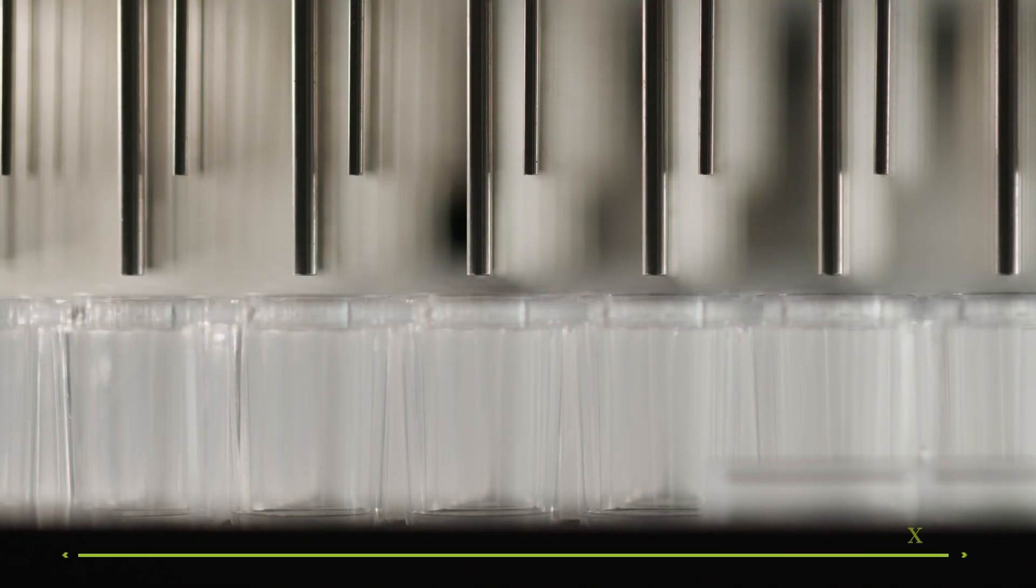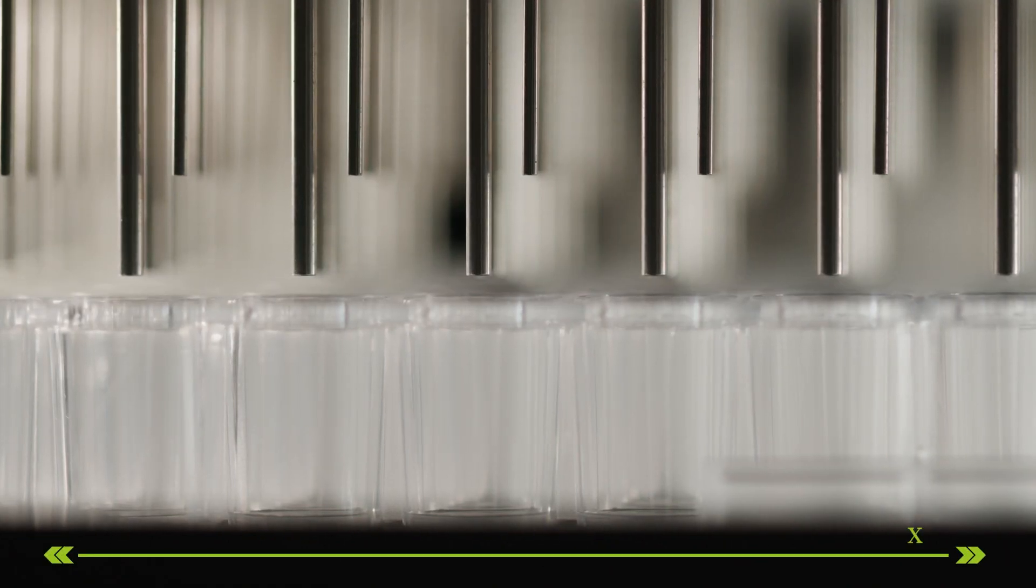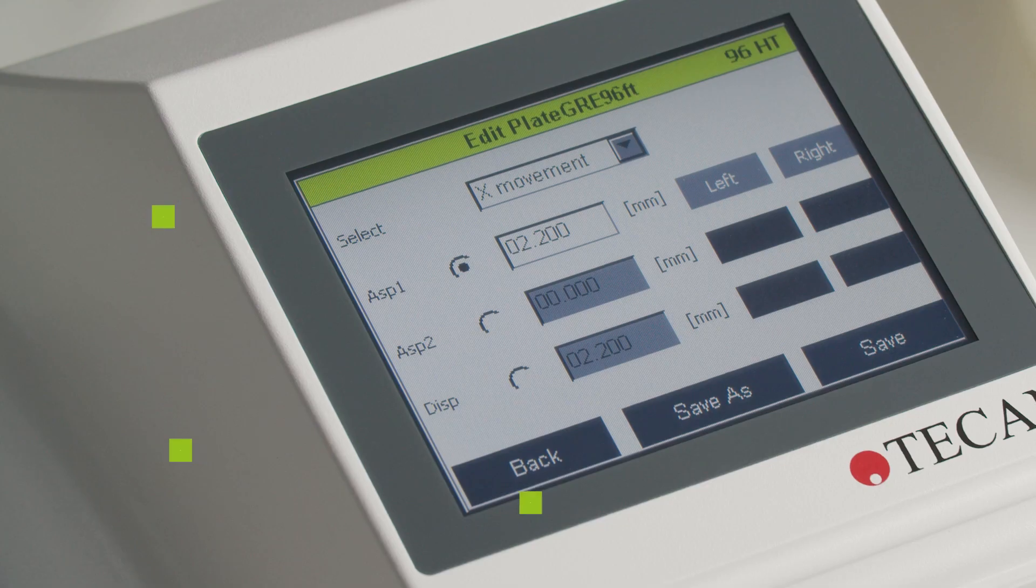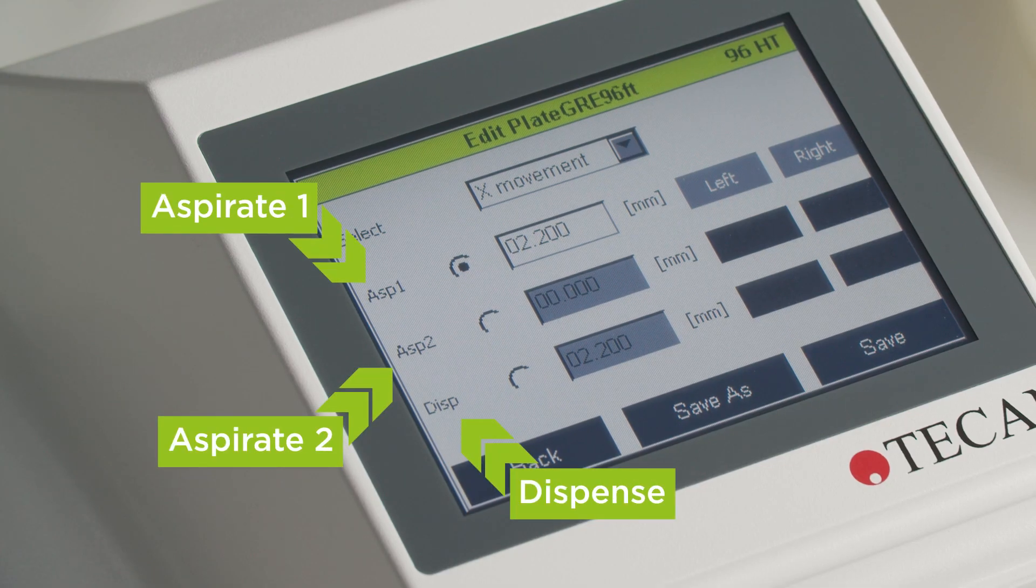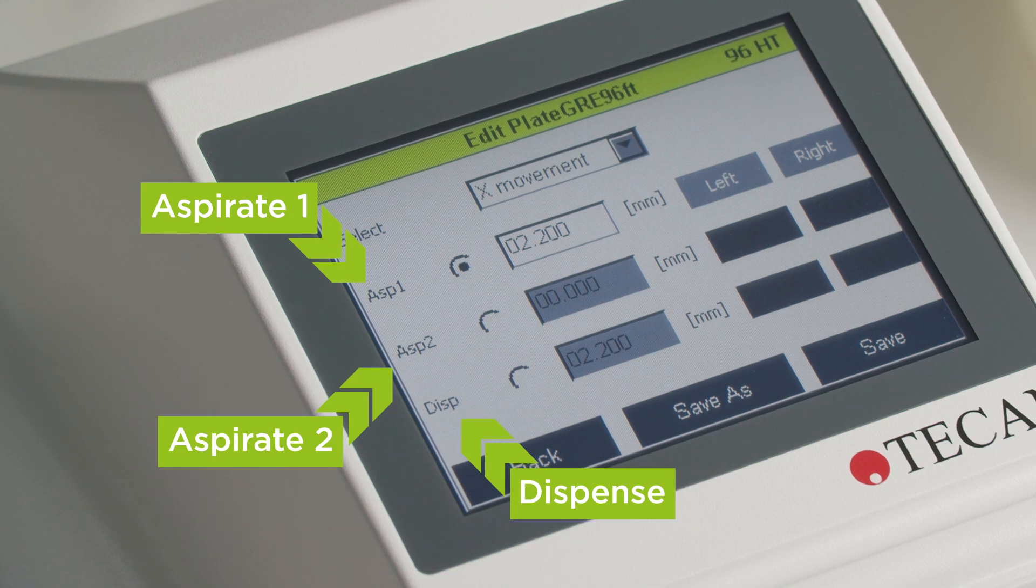X movement is the movement of the needle from the centre of the well to the left and right side. This includes the aspirate 1, aspirate 2 and dispense positions. The long needles are used to aspirate and the shorter ones to dispense.